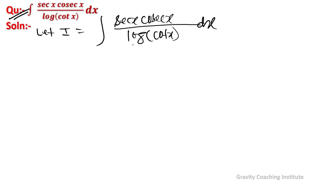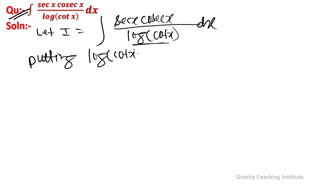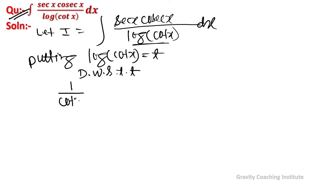If we differentiate log cot x, we get sec x cosec x. So putting log cot x equal to t and differentiating with respect to t using the chain rule. By log definition, the derivative gives 1 upon cot x.